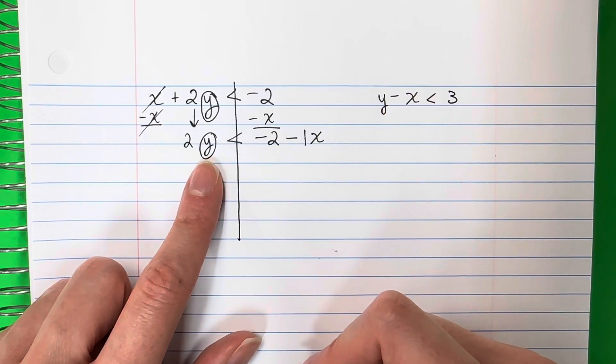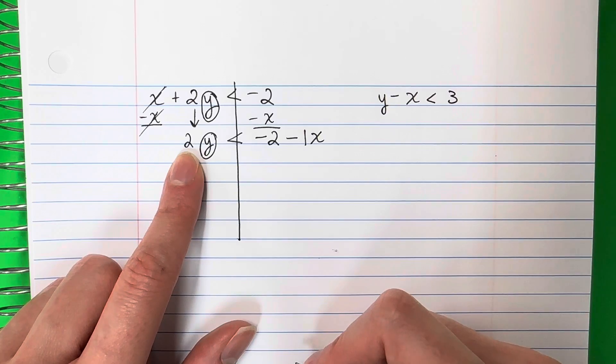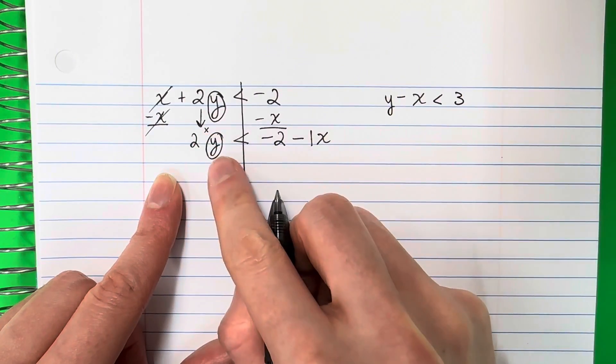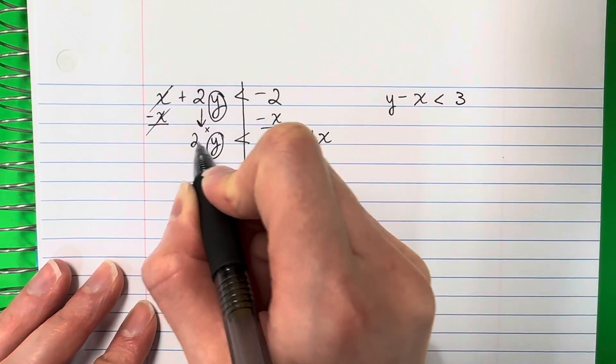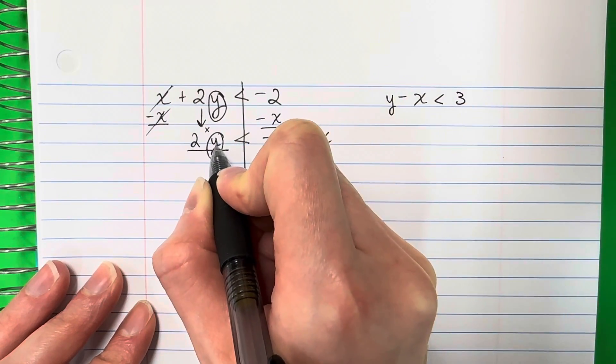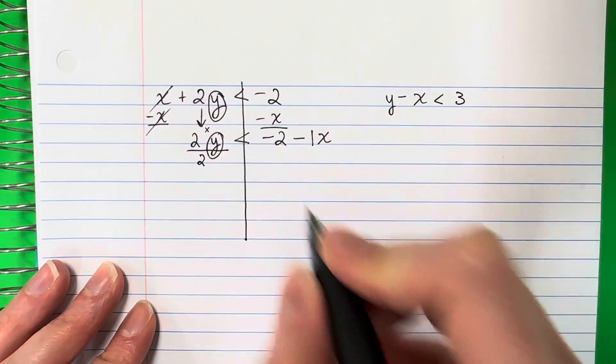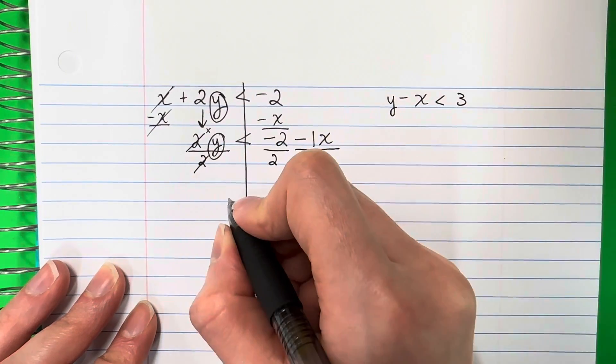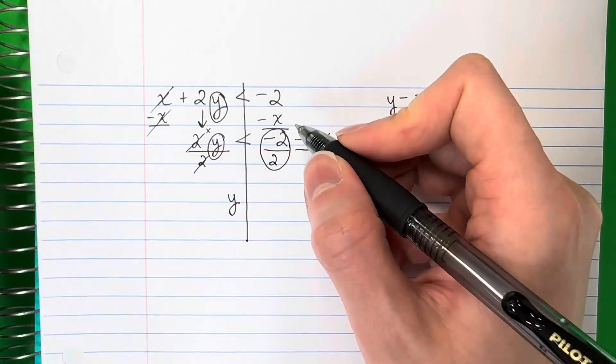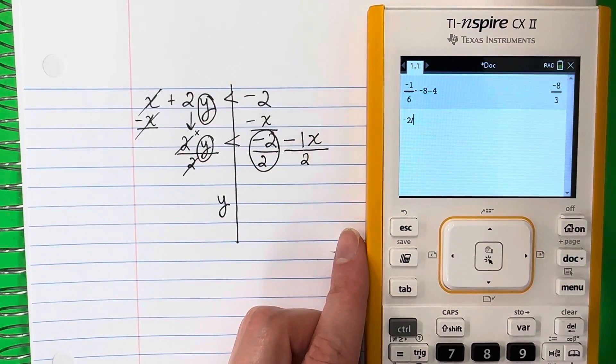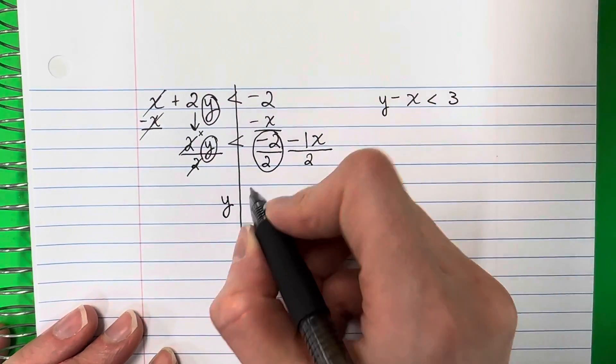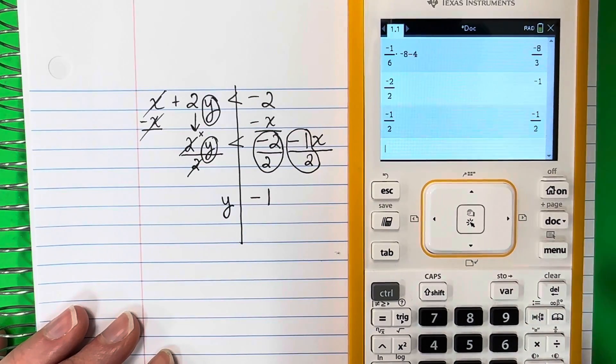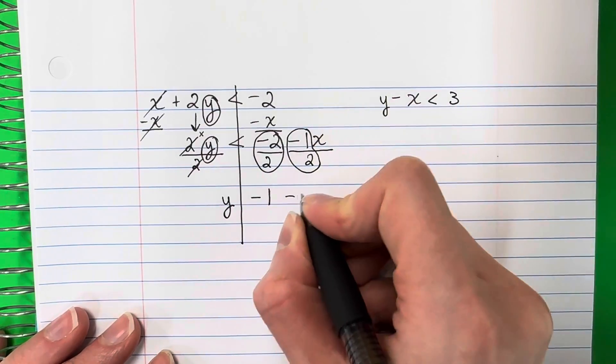Copy. Minus x. x minus x is 0, it cancels. Copy 2y. Circle your y. This is less than. These are not like terms because this does not have an x and this has x. They are different. So copy negative 2 minus x. And if there's no number here, you put a 1.